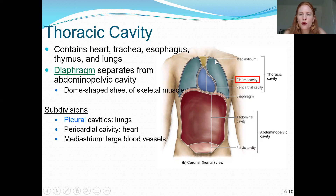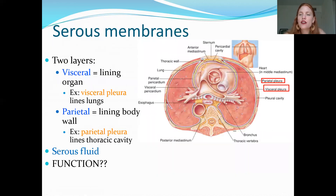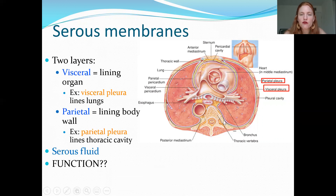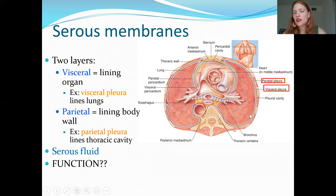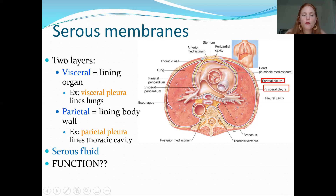Above the diaphragm is the thoracic cavity. We have the pericardial cavity where the heart is, and then the two pleural cavities on the sides — that's where the lungs are found. Those pleural cavities have a pair of serous membranes: the visceral pleura, which directly lines the outside of the lungs, and the parietal pleura, which lines the inside wall of the rib cage.